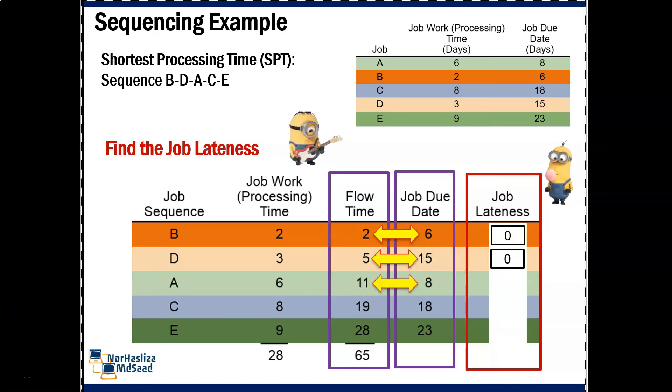For A, flow time is 11 and job due date is 8, so it's late 3 days. For C, flow time is 19 and job due date is 18, so the job lateness is 1 day.